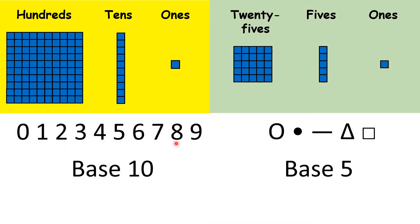We use 10 digits to represent numbers, so we can say that our number system is base 10. That means that when you have 10 of something, you move to the next place value column along, or putting it a different way, each place value is 10 times larger than the place value before it.